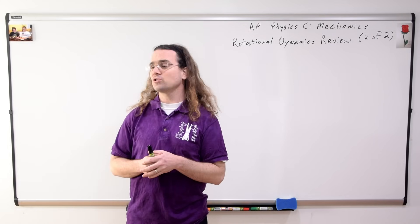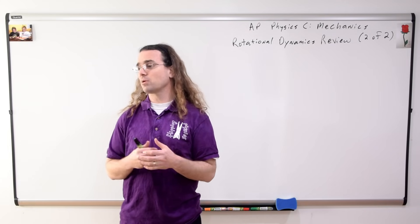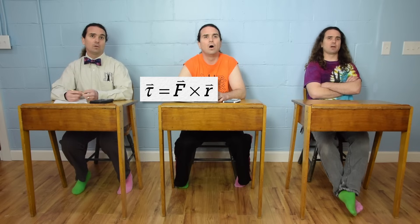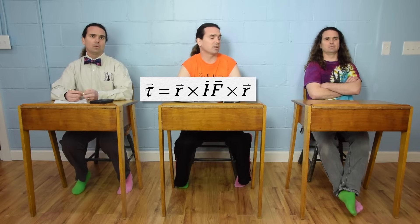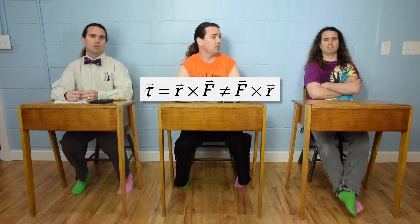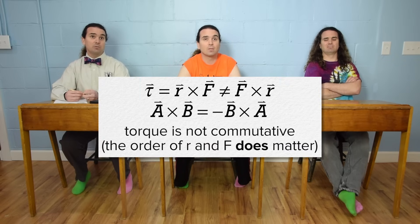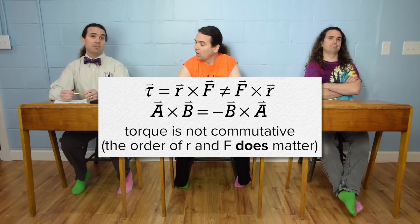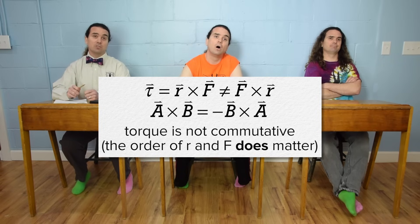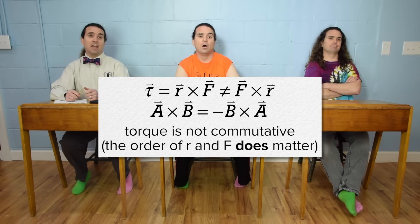What is the equation for torque which includes the cross product? Torque equals the cross product of F and R. Actually, torque is the cross product of R and F. Does the order of R and F really matter? Well, yes — the cross product is not commutative. Of course it's not. And we should also point out that R is the position vector from the axis of rotation to where on the object the force is applied.